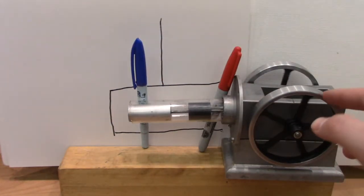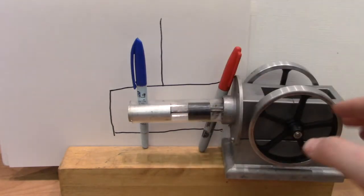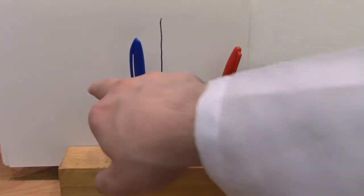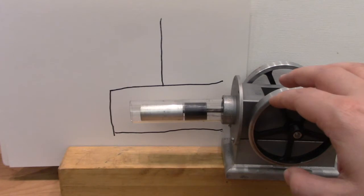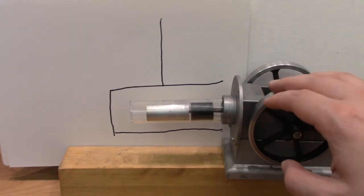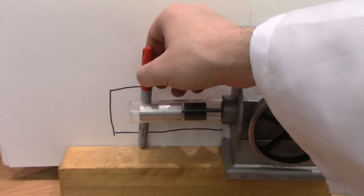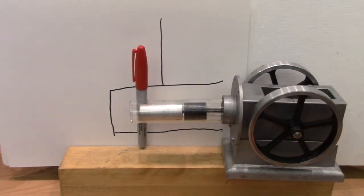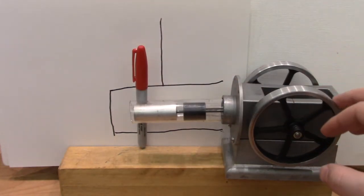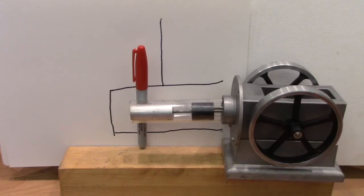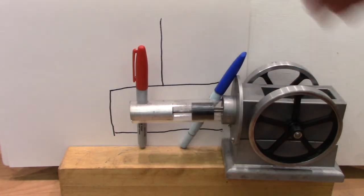And then we repeat, compressing the gas while it's on this side, and expanding the gas while it's on this side. If we run it in reverse then, we compress all the gas when it's over on this side, heating up that side. And we expand all the gas when it's on this side, making this side the cold side. Compress to the left, expand to the right.